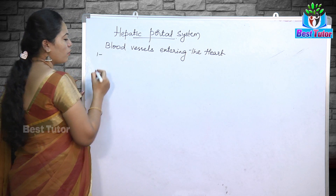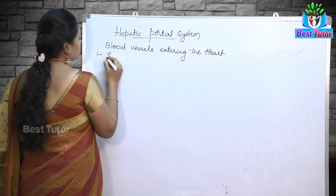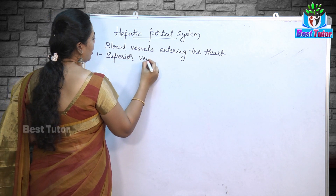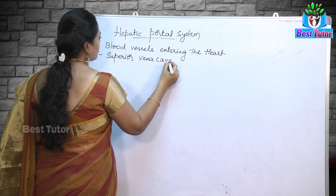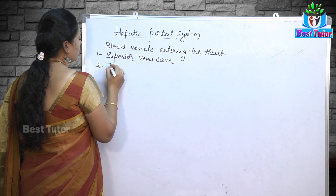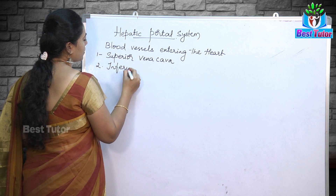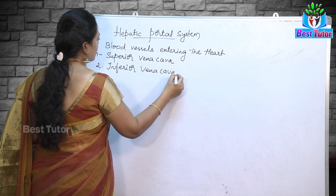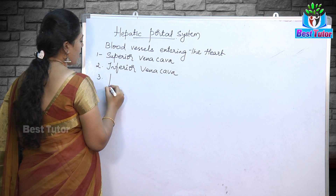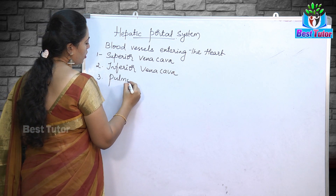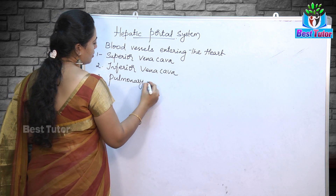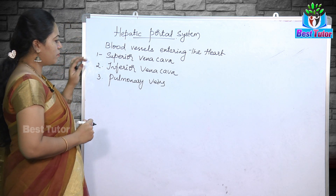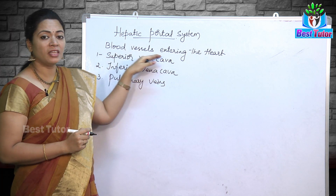The first one was superior vena cava. Secondly, inferior vena cava. Then thirdly, pulmonary veins. So these are the blood vessels which are entering the heart.